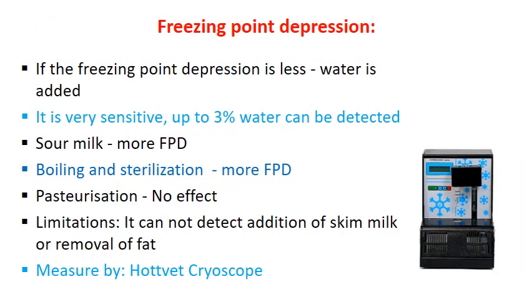Freezing point depression has significant applications. If water is added as adulteration, the freezing point depression will be less. It is very sensitive — up to 3% added water can be detected. In sour milk, freezing point depression will be more. Boiling and sterilization also increase freezing point depression, while pasteurization has no effect. However, it cannot detect addition of skim milk or removal of fat. Freezing point depression is measured by a hot weight cryoscope.